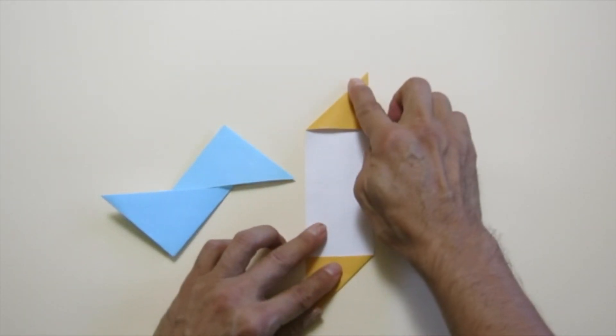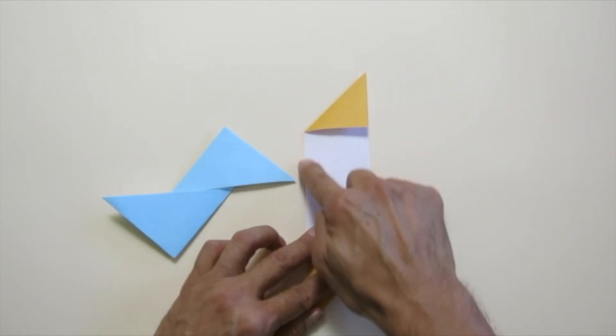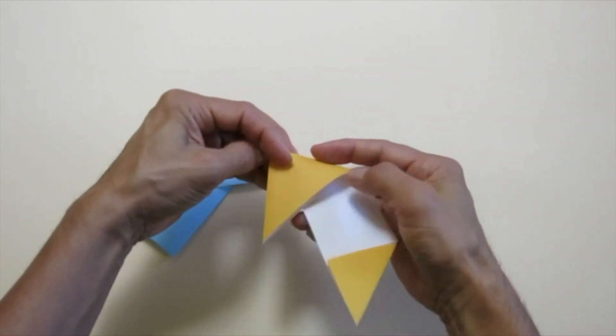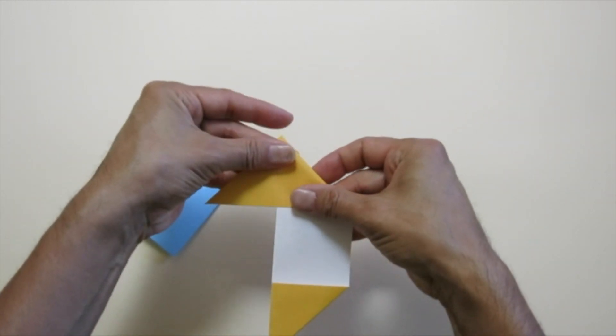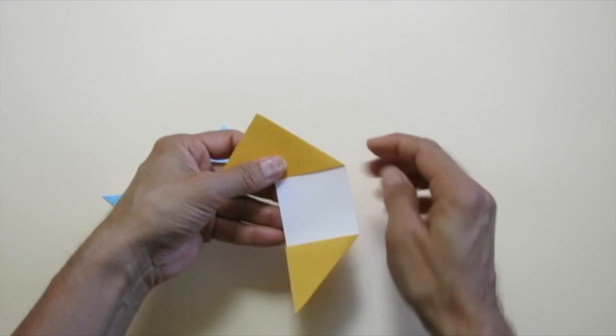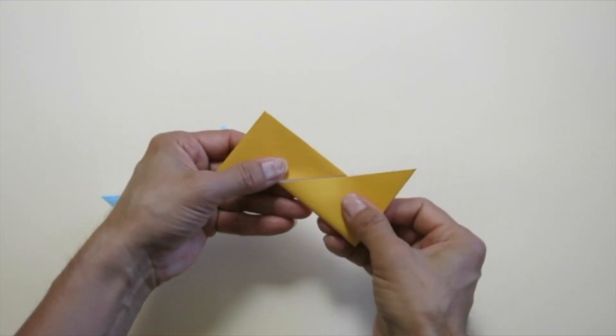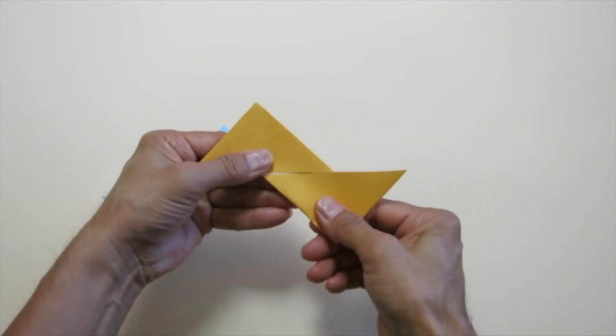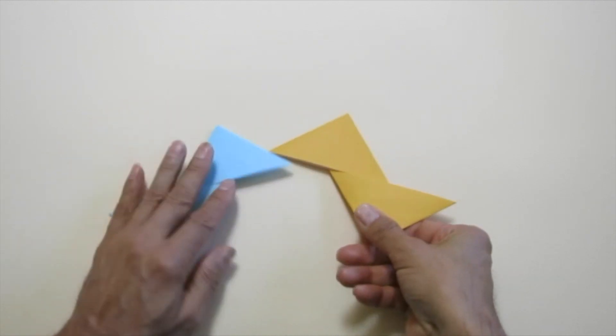Move on to the next strip. Bring this edge to the left edge. Make a valley fold. These two modules are symmetrical. They are mirror images.